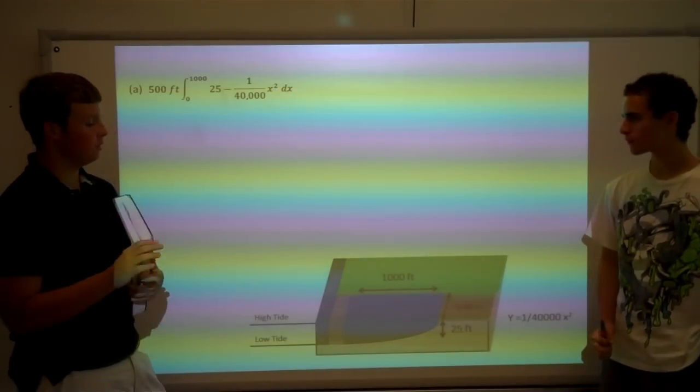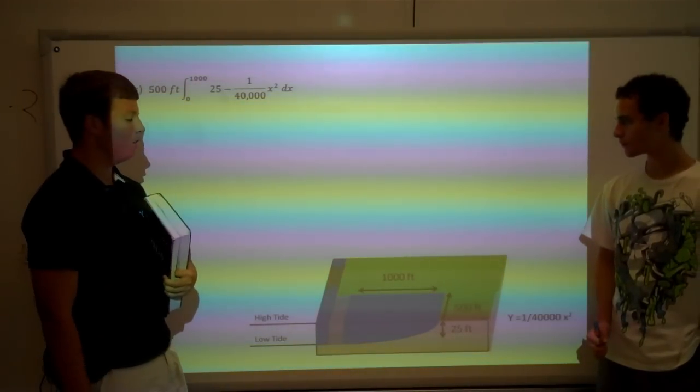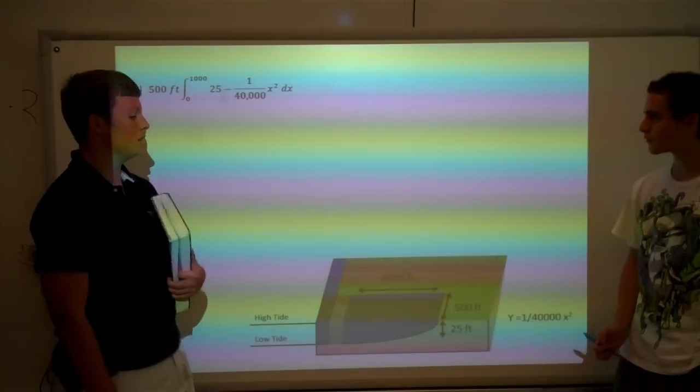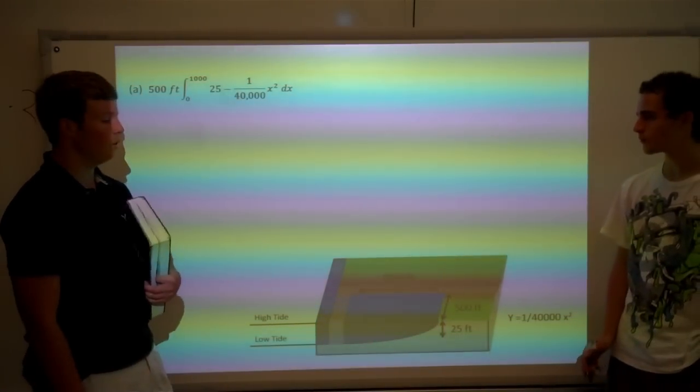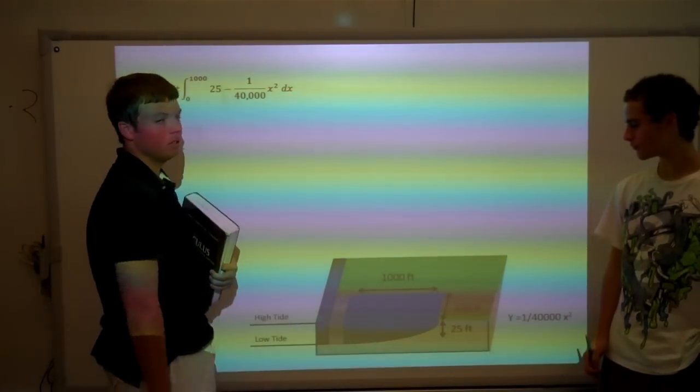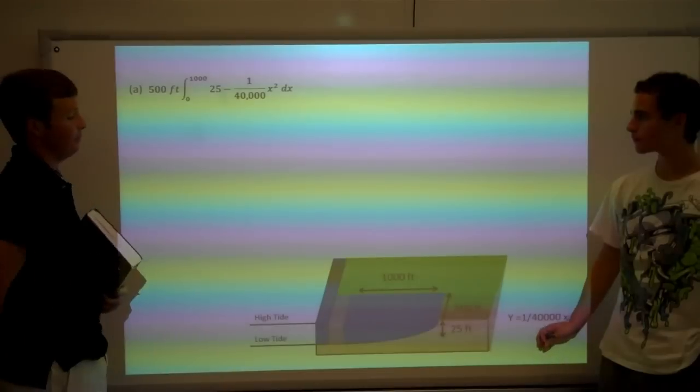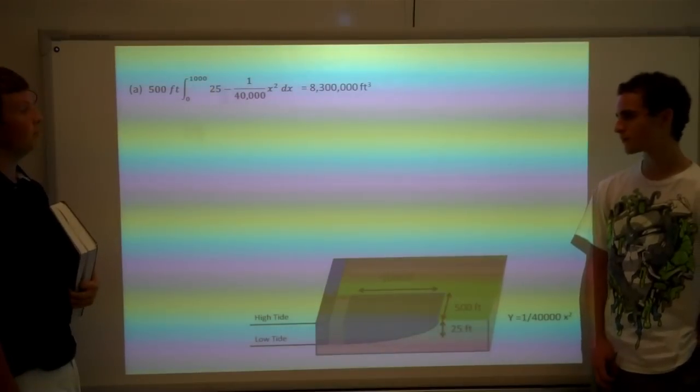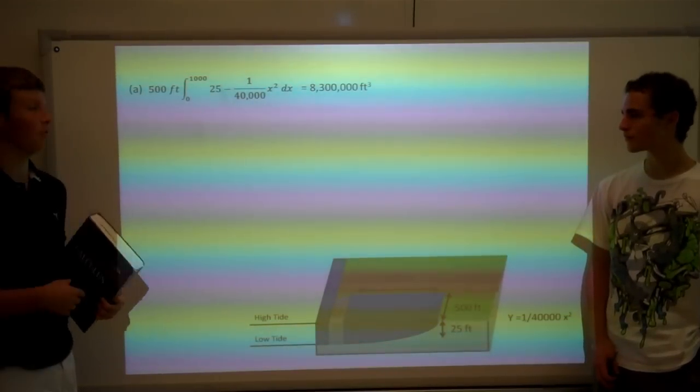In this case, the deepest point of the basin is 25 feet. So you do 25 minus the equation y equals 1 over 40,000 x squared. And then to turn it into a three-dimensional problem, you multiply it by the z coordinate, 500 feet. And you get, with significant figures, 8,300,000 cubic feet.